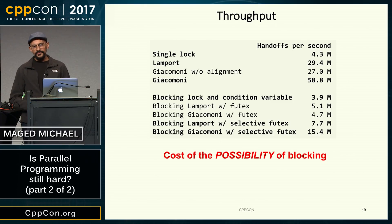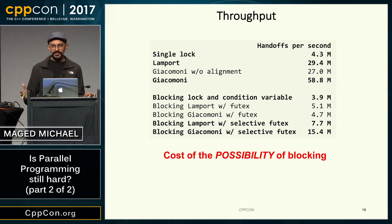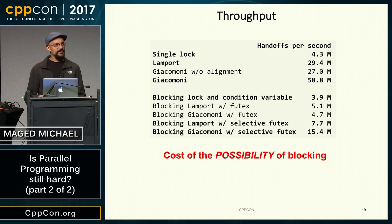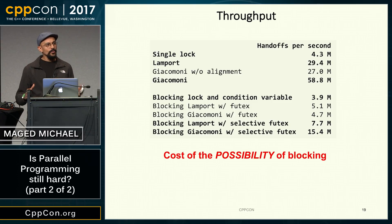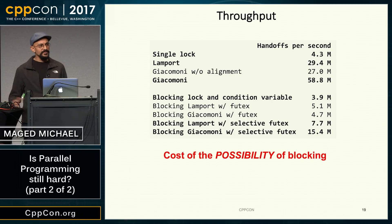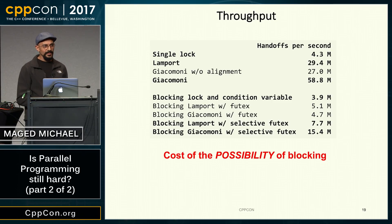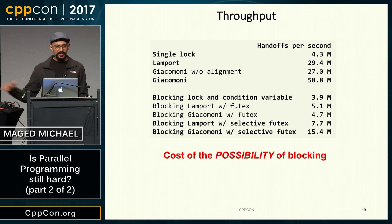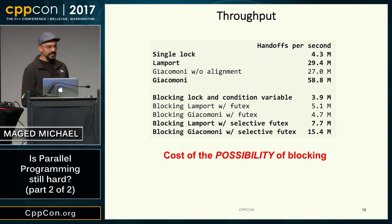If you're designing a library, you should provide both blocking and non-blocking variants, because some users might have a very streamlined communication between producer and consumer where the consumer can afford to be awake all the time, and the stream of communication between the two threads actually keeps the consumer occupied.